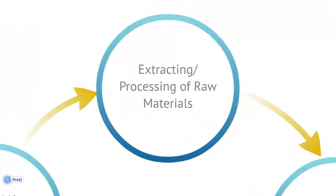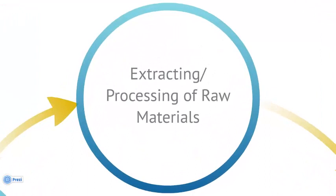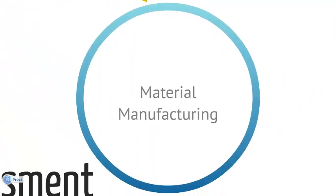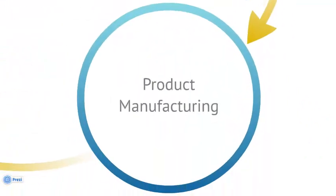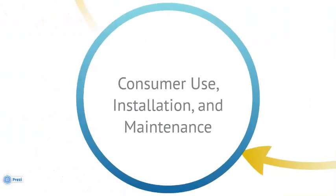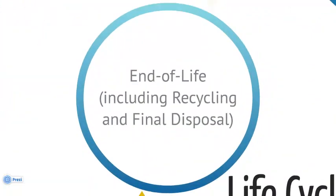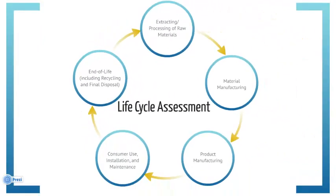The life cycle stages that are generally considered include: extraction and processing of raw materials, material manufacturing, product manufacturing, consumer use, installation and maintenance, end of life, including recycling and final disposal. Life cycle assessment is a very valuable tool for product designers to understand the environmental impacts in each life cycle stage, which helps you reduce those impacts in the design process.